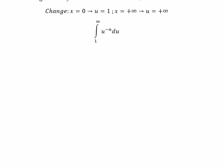And now we can get the answer. The integral of u to the power of negative n gives us u to the power of negative n plus 1 over negative n plus 1, and we put the bounds in here.